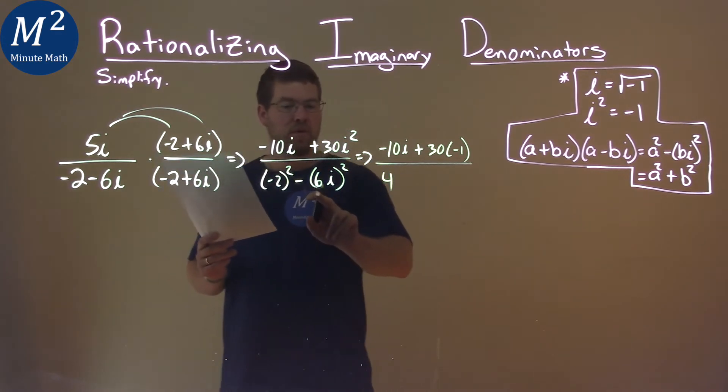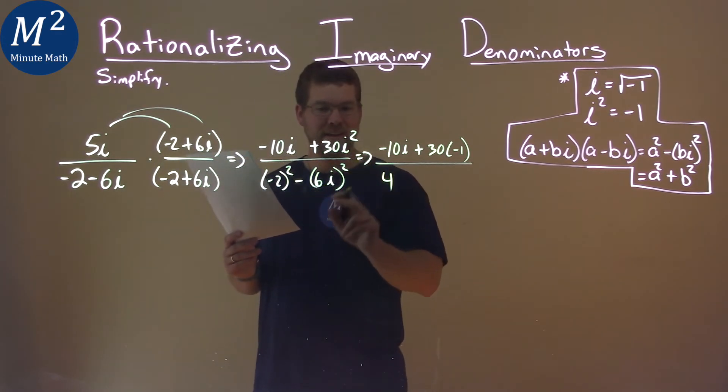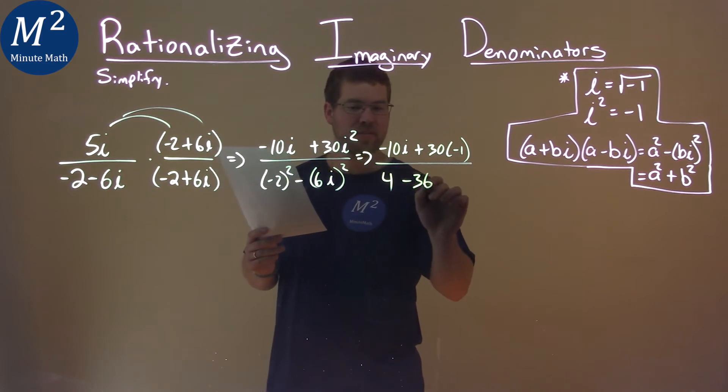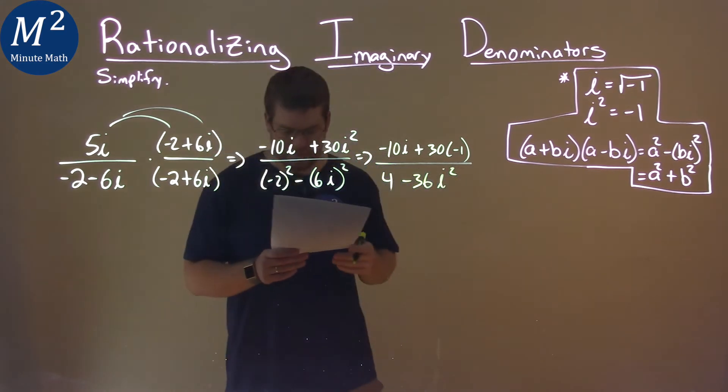And then 6 squared is 36, so minus 36. And then we have i squared here.